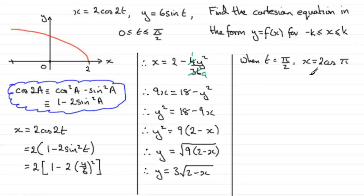Cosine of π is negative 1. 2 times negative 1 gives us negative 2. So x equals minus 2. And you can see that the corresponding value of y, when that happens, if we substitute π upon 2 into here, the sine of π upon 2 is 1, and 6 times 1 is 6. So you can see that that must be this value up here.